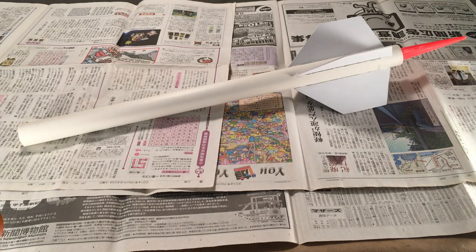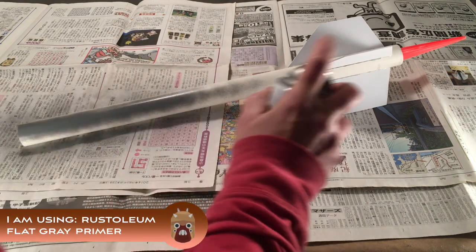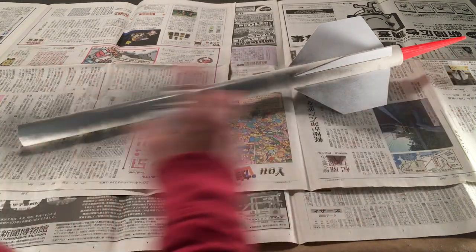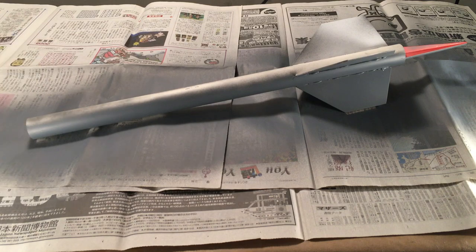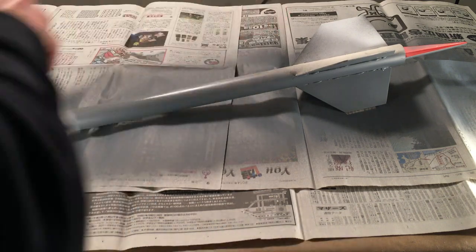In a well-ventilated area, apply your choice of primer spray. Move the can in a back and forth motion to apply light mist coats. After about 40 minutes, flip the piece over and spray the other side. Allow the primer to cure for at least 24 hours.